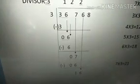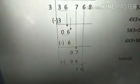Now we subtract 6 from 7. After 6, count to 7 — how many fingers? 1 finger. So the answer is 1. Now I bring down the next digit 6. What dividend do we get now, children? 16.